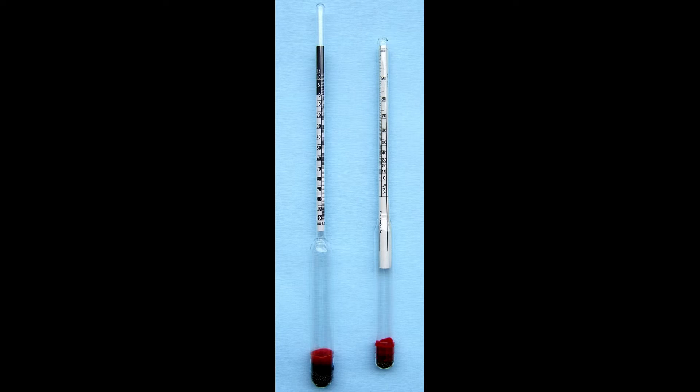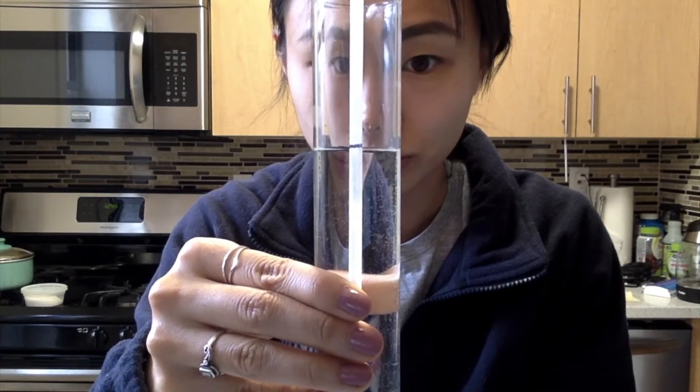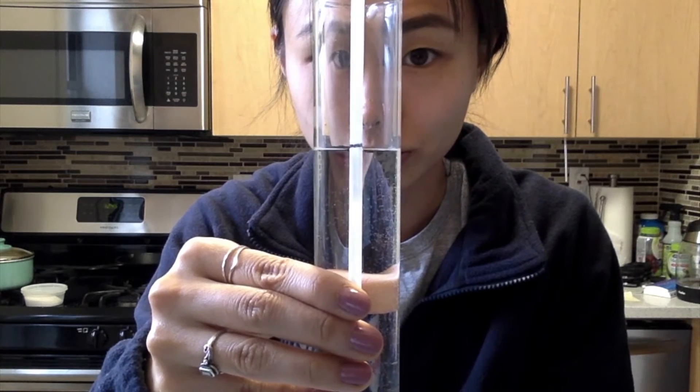A scientific hydrometer looks similar to a thermometer. However, it does not have internal liquids. Today, we will be making an at-home hydrometer to measure the densities of common household liquids.